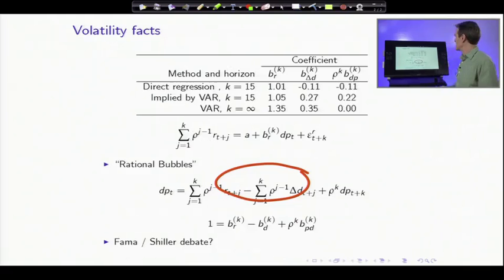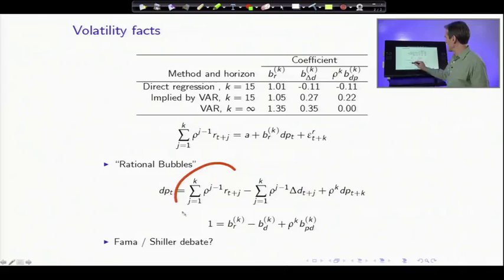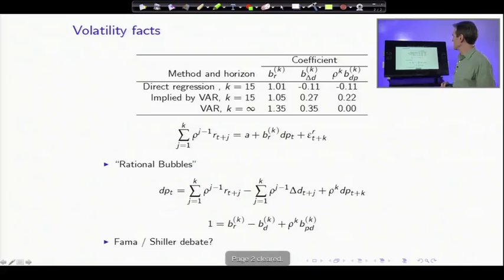And here's another table from discount rates. The direct regression line is one where I simply ran exactly those regressions. I added up 15 years of subsequent returns and 15 years of subsequent dividend growth. Let's run those regressions and see how the two coefficients add up.